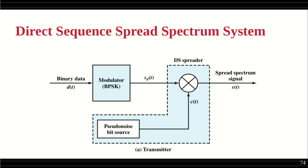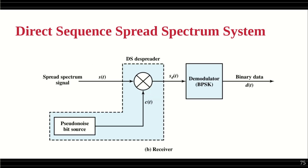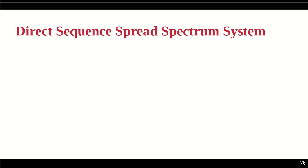While the earlier figure showed the output signal as digital to understand the spreading via XOR, the same concept applies to analog signals. Using a pseudo-noise bit stream, we perform direct sequence spreading and the spread spectrum signal is transmitted. At the receiver, using the same pattern, the direct sequence de-spreader will de-spread the information, and the demodulator converts it back to the original binary data.